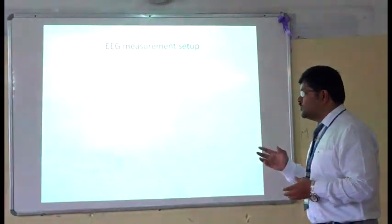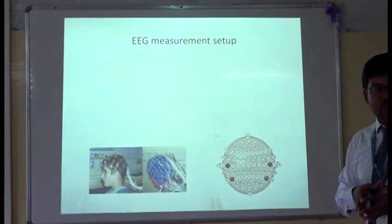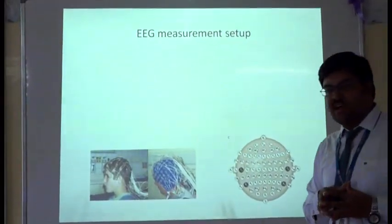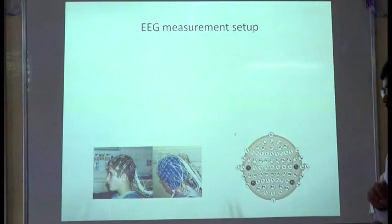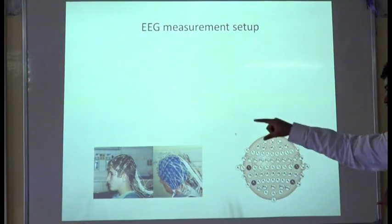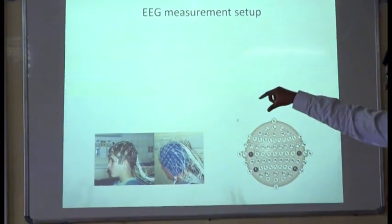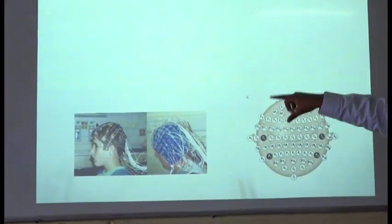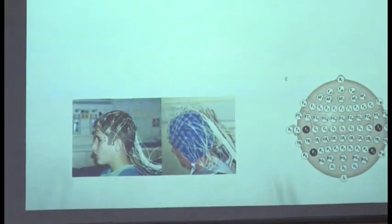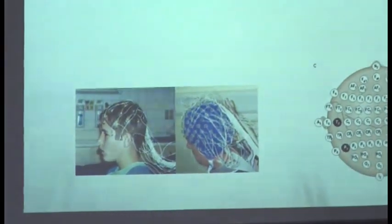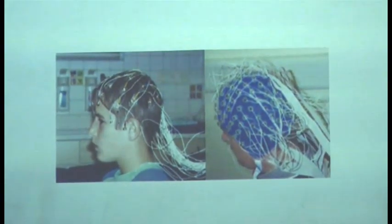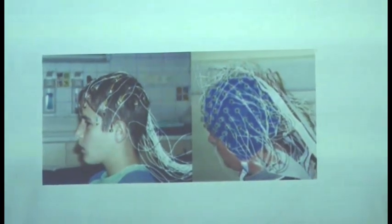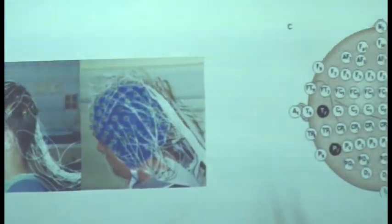EEG is recorded by placing electrodes on the scalp — on the skin of the head. Normally 64 to 256 electrodes are placed, and then the signal is captured, amplified, and filtered to remove noise before we obtain the EEG signal.